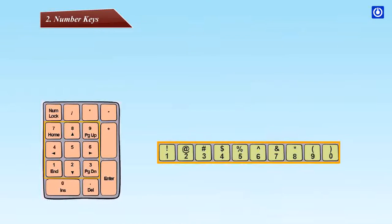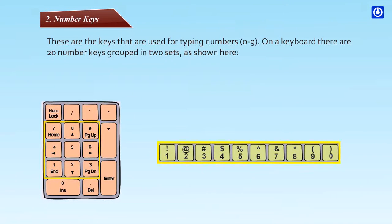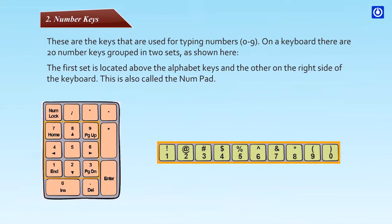Number keys: These are the keys that are used for typing numbers zero to nine. On a keyboard there are 20 number keys grouped in two sets as shown here. The first set is located above the alphabet keys and the other on the right side of the keyboard. This is also called the numpad.